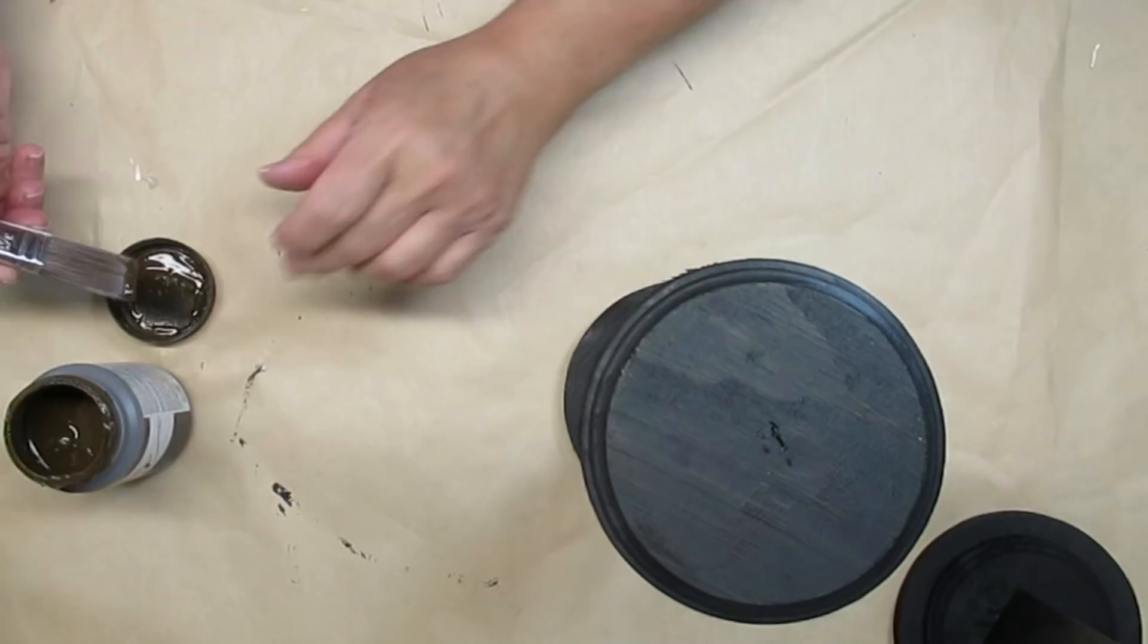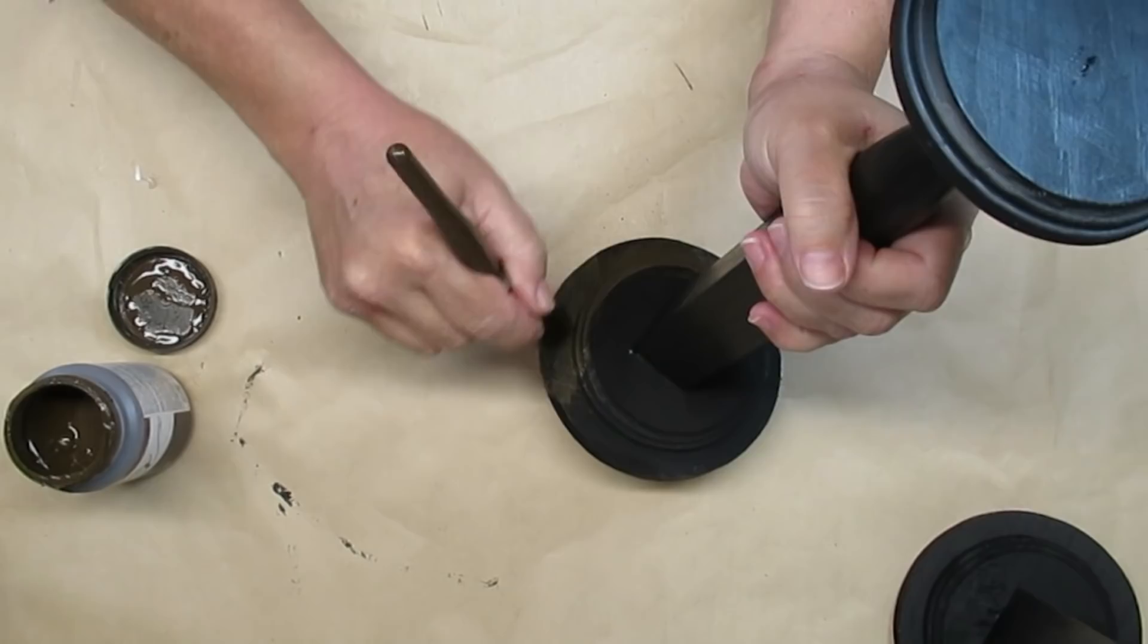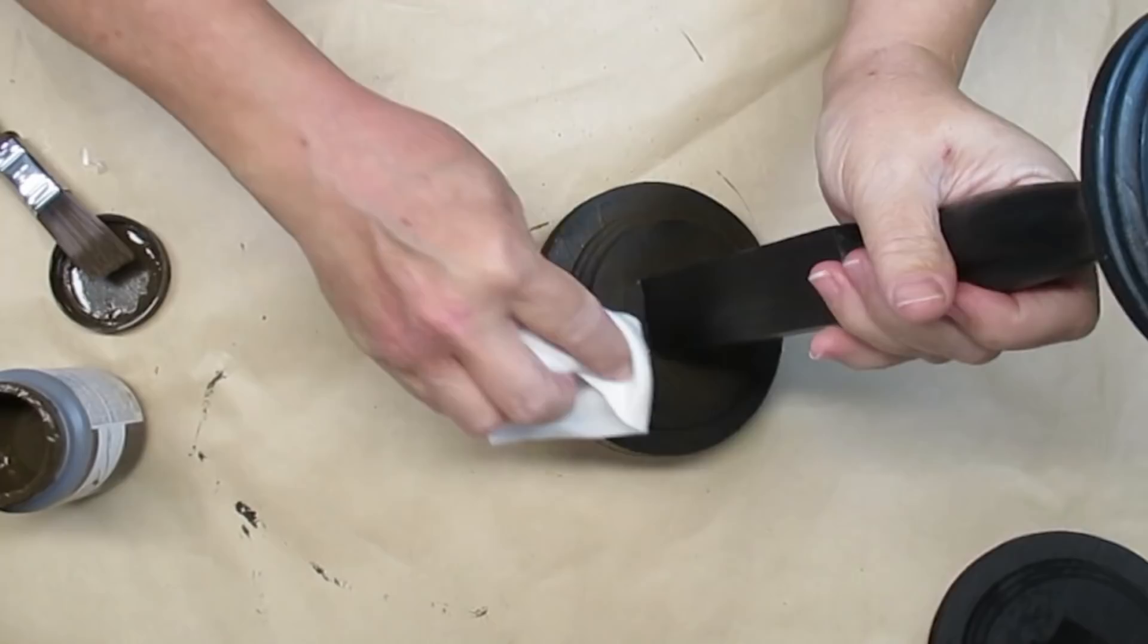I painted these black using the same Folk Art multi-surface paint. It is in a satin finish—it's the only finish it's available in, so you can see a little bit of shine in there. I'm okay with that because I'm going to be putting this antiquing wax on top of it and then wiping off the excess. That will dull the shine down a little bit and it will also give it a beautiful old and deep rich black look.